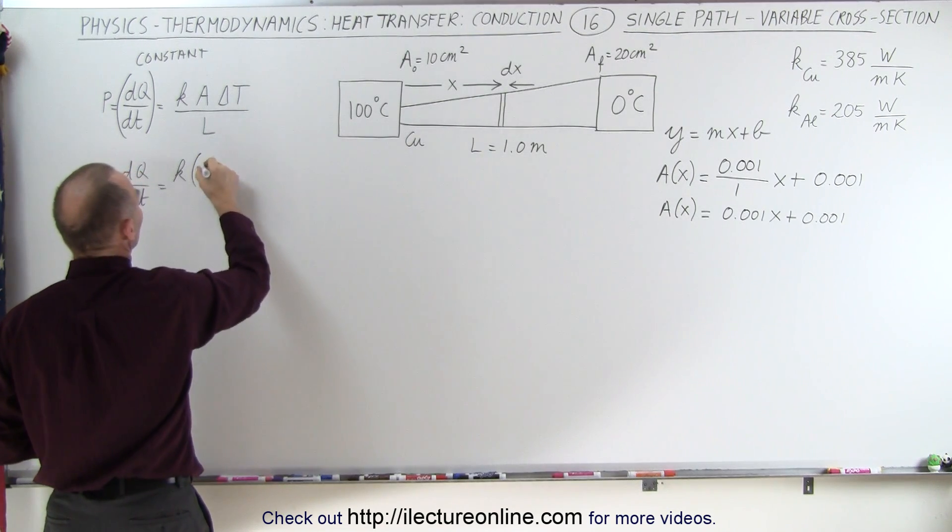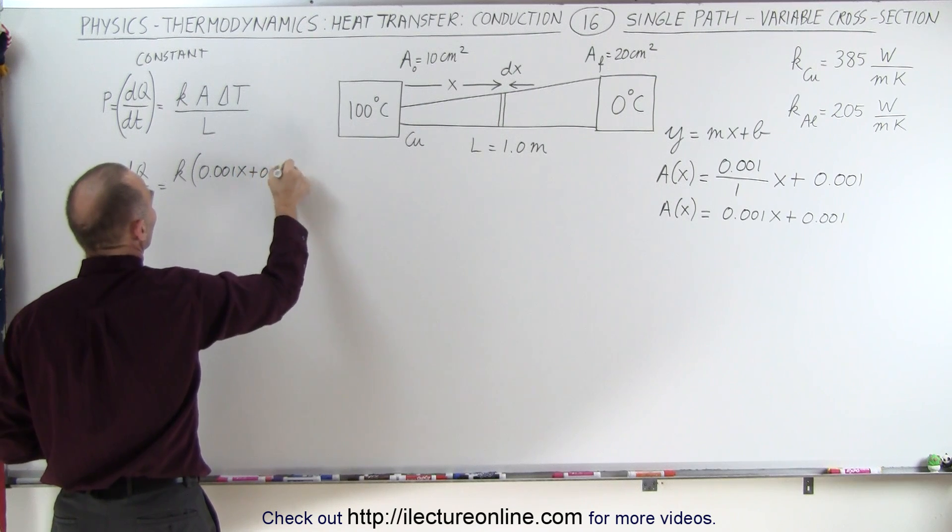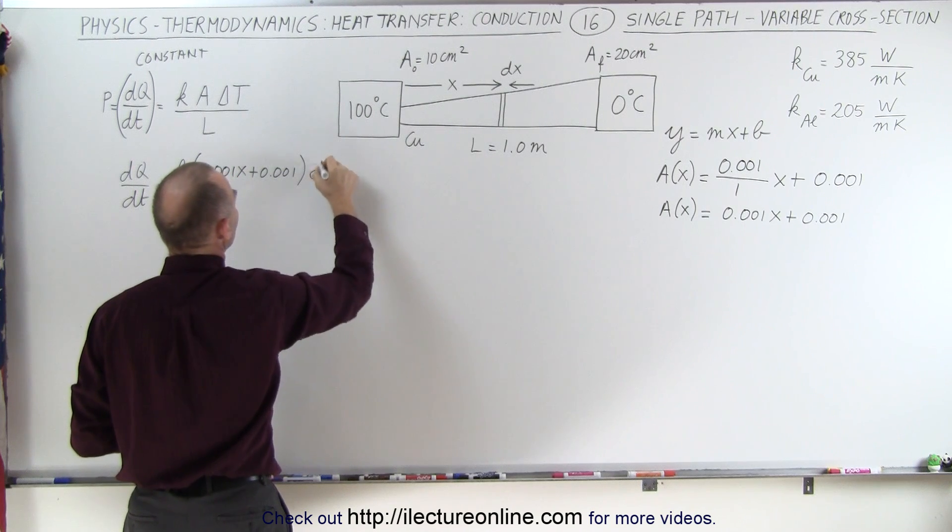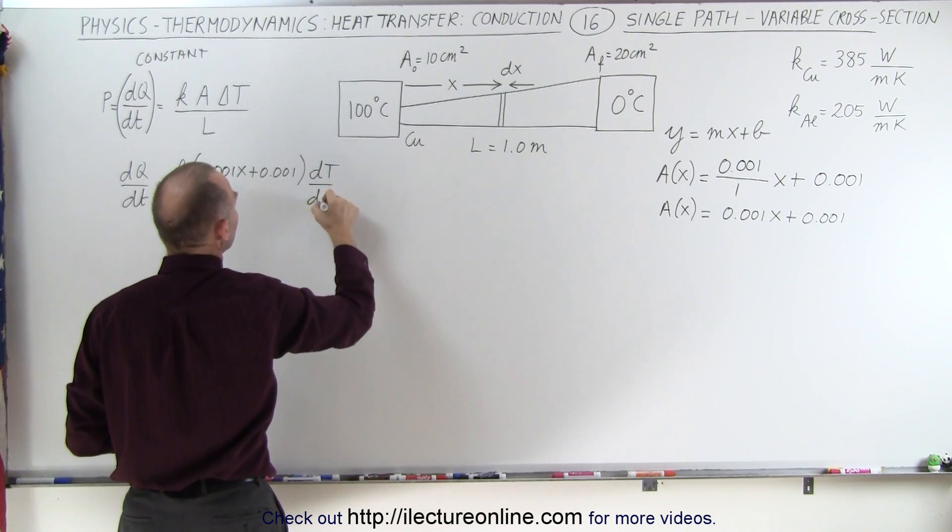...instead of A, we write 0.001x plus 0.001 times delta T delta x. So d temperature dx.